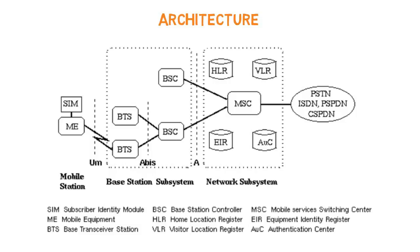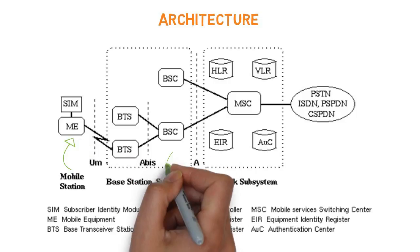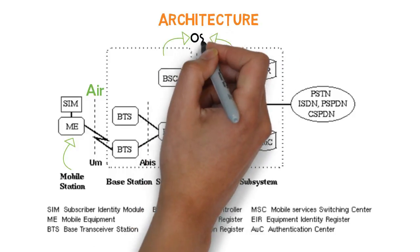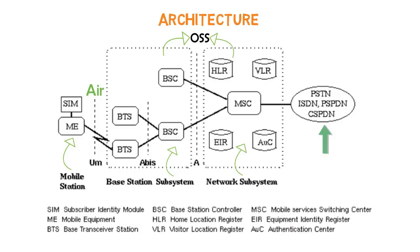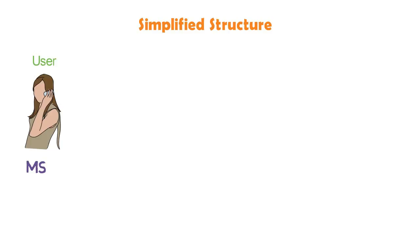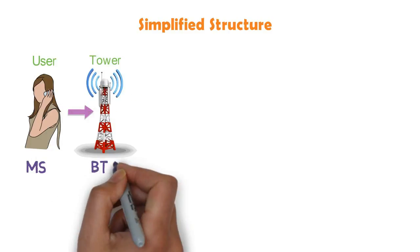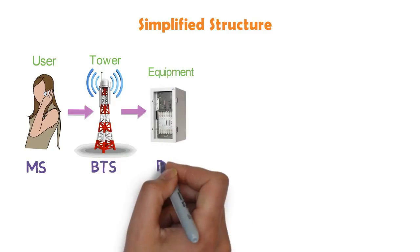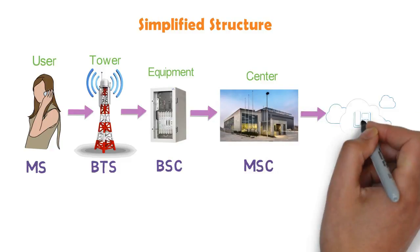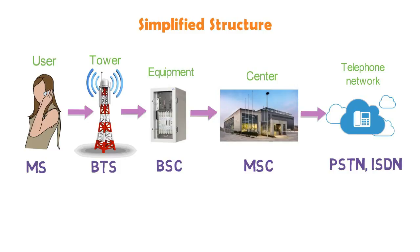Now let's view the GSM structure again. The mobile station sends a signal to the BSS through an interface. The BSS routes that signal to the NSS, which performs various tasks as discussed earlier. BSS and NSS are supported by the OSS. Finally, the signal from NSS is sent to an external wire network like PSTN, ISDN, etc. In simplified terms: the user calls a number using their mobile; the signal is received by the mobile tower (BTS); it is routed to the BSC for allocating a radio channel, then reaches the MSC for tracking location and authentication; and finally the signal is transferred to the telephone network. At the receiver side, signal transmission occurs in reverse direction.